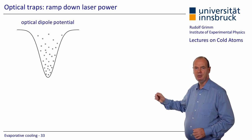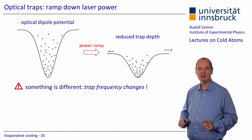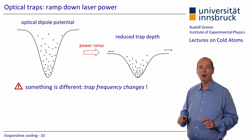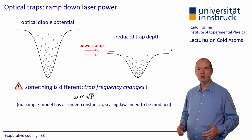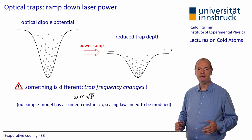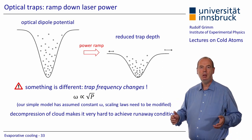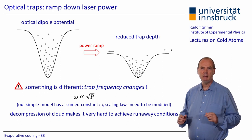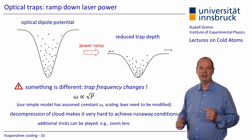In an optical dipole trap, the trap depth can be reduced by simply ramping down the laser power. But something is different to the scenario discussed before: the reduction of the laser power also reduces the trap frequency omega, and omega is proportional to the square root of the power P. In our simple model presented before, we had assumed constant omega. With varying omega, the scaling laws for density, phase space density, and collision rate need to be modified, which however is not very difficult. As an important consequence, the decompression of the cloud with decreasing omega makes it very hard to achieve runaway conditions. For gaining several orders of magnitude in the evaporation process, one has to play additional tricks, like dynamically reducing the laser beam diameter by a zoom lens. I will present another powerful trick in a minute.